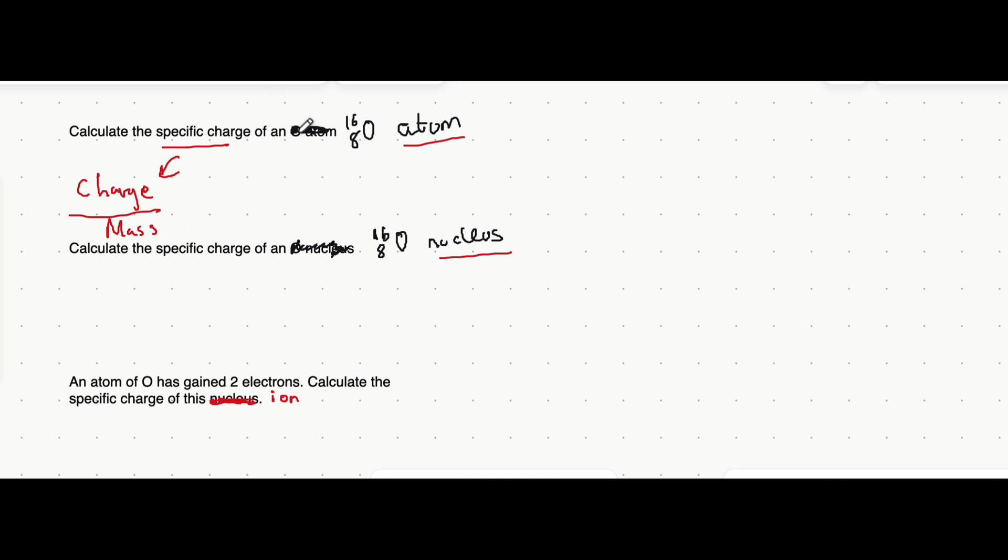This first question is actually a bit of a trick question because an atom has protons, neutrons, and electrons. Neutrons are uncharged, so they have no effect on the charge of an atom, whereas the number of protons, which is 8, is balanced by the number of electrons, meaning the overall charge is balanced. This would just be 0 divided by, it doesn't even matter what the mass is, because 0 divided by any number is just 0, so the specific charge of any atom is just 0 itself. Charge is measured in coulombs, mass in kilograms, so it's coulombs per kilogram for the unit.